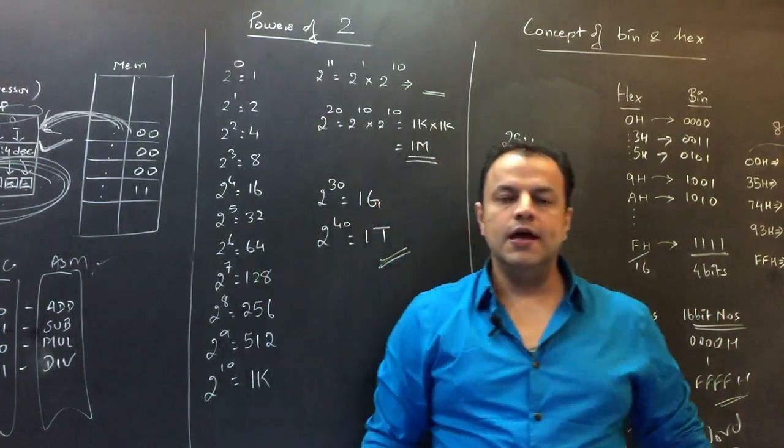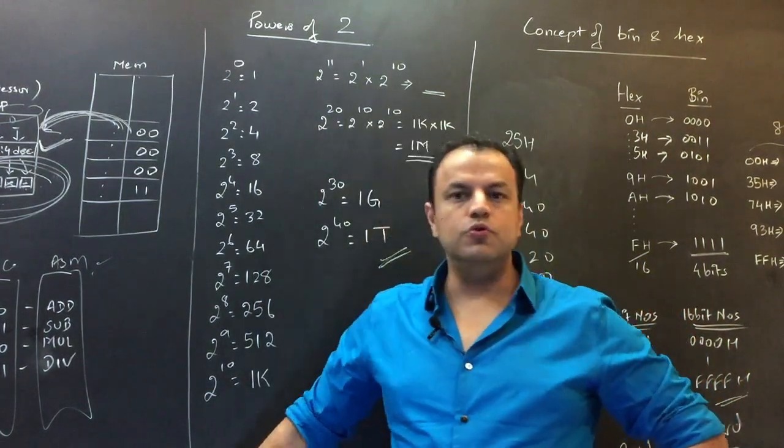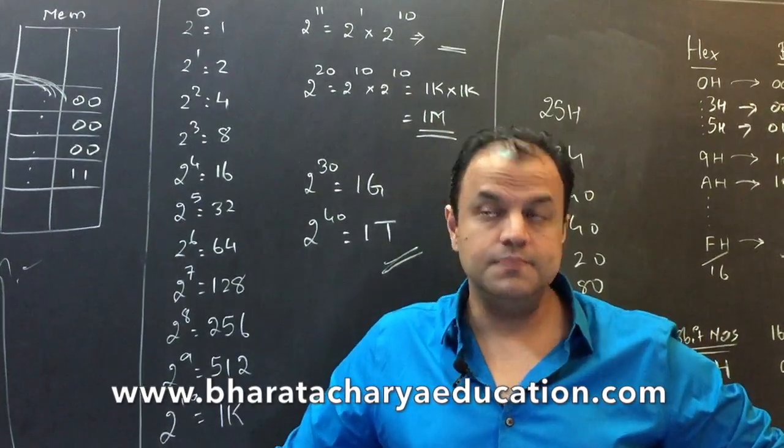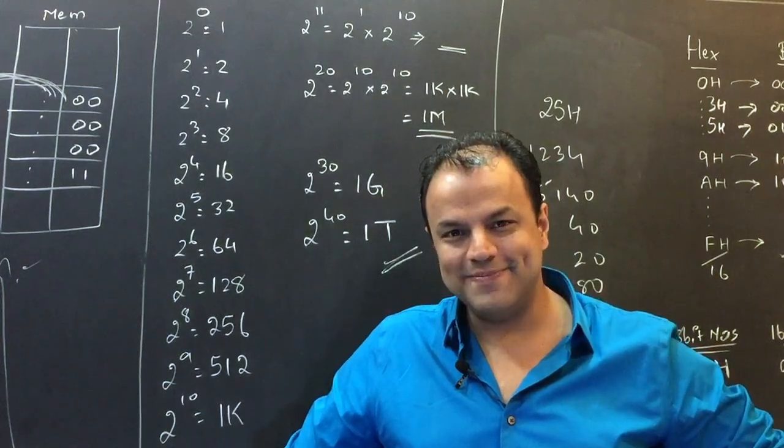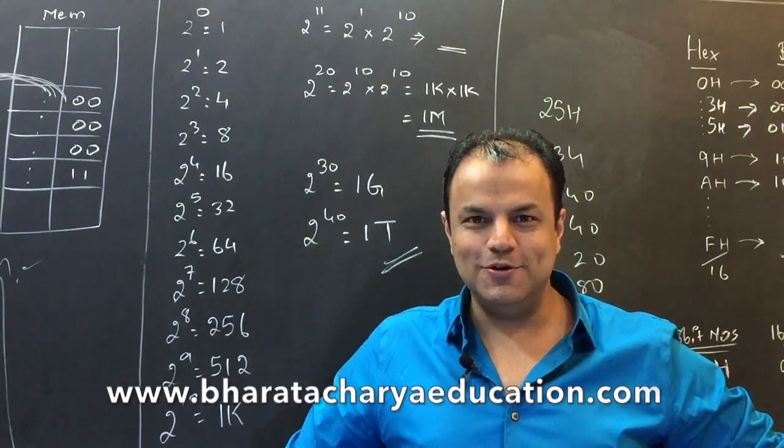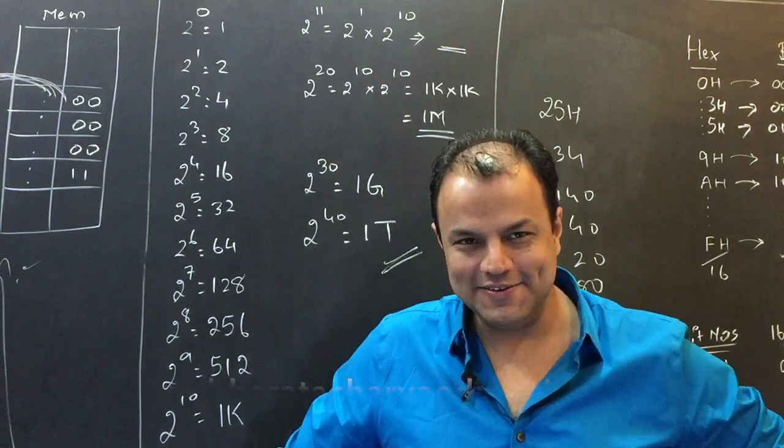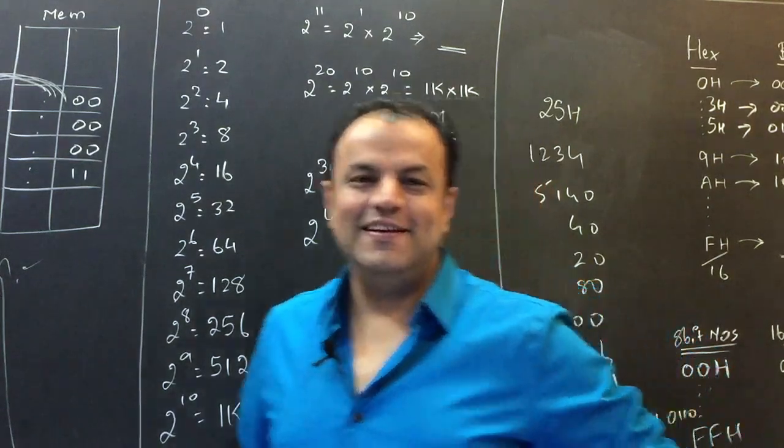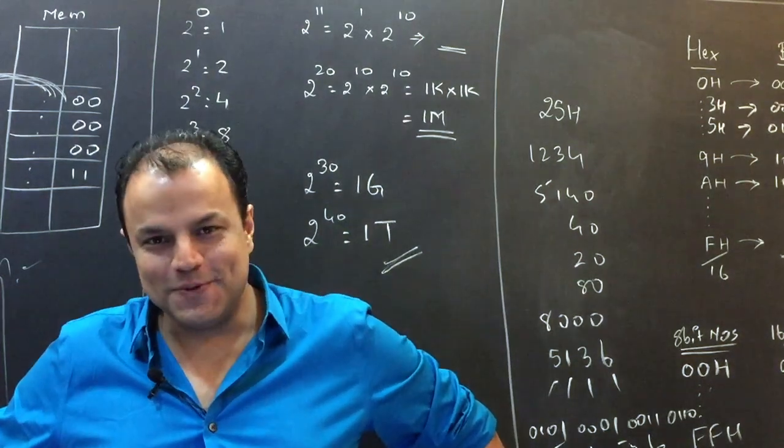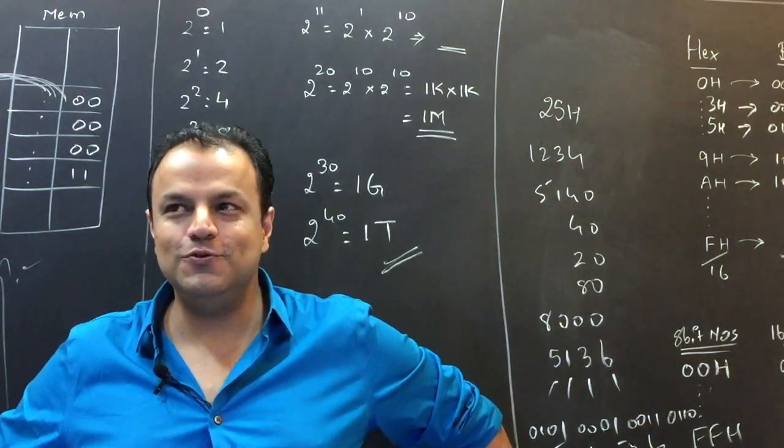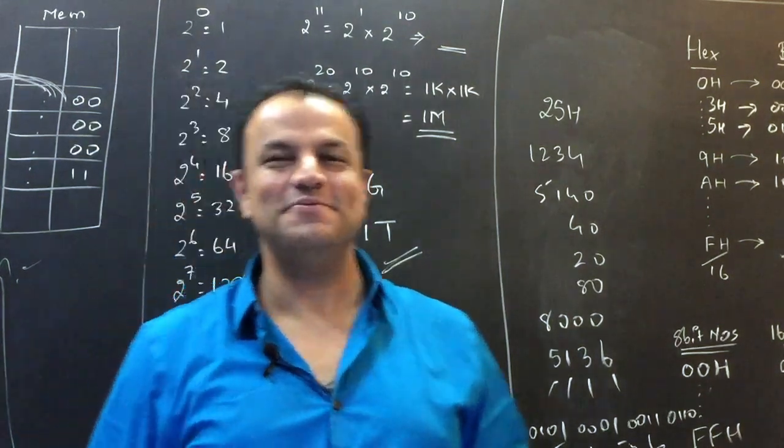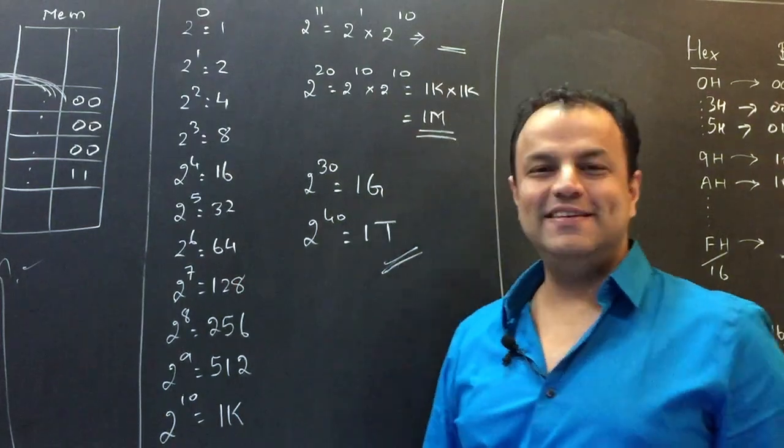And if I ask you any power of two, you should be able to answer. If you want, try to answer it from your mind. Two raised to five, 32. Two raised to seven, 128. Two raised to three, eight. Two raised to four, 16. Two raised to six, 64. Two raised to seven, 128. Two raised to two, four. Two raised to eight, 256. Two raised to nine, 512. Two raised to 10, 1K.